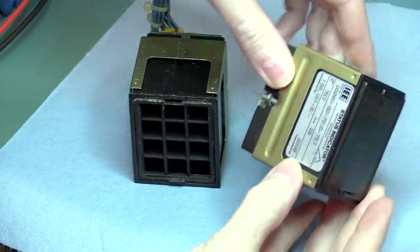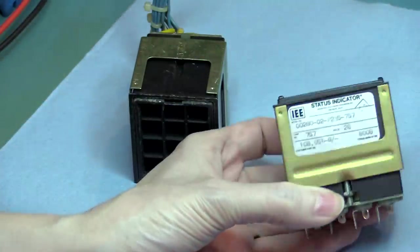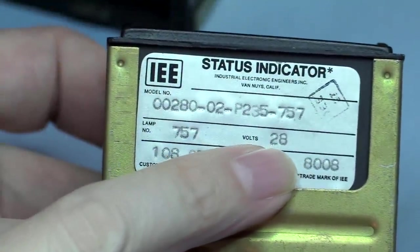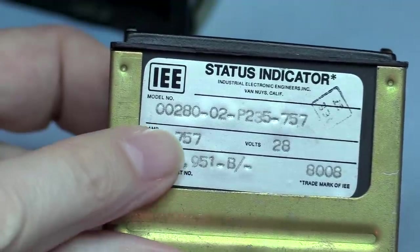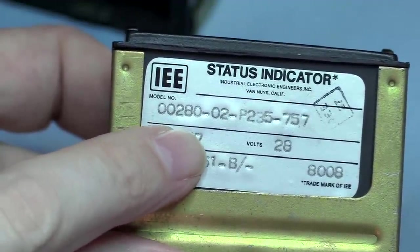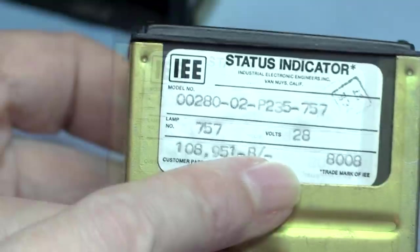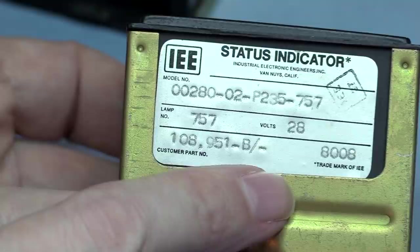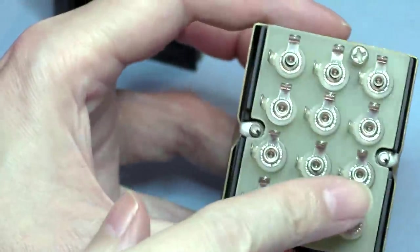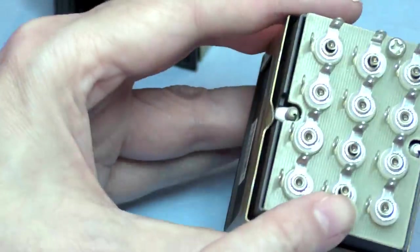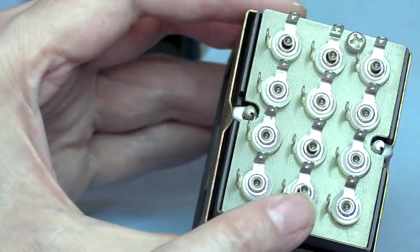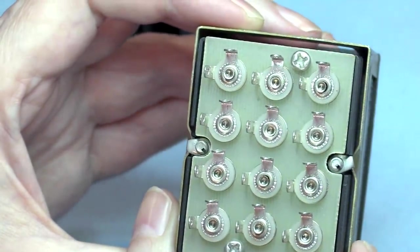Here we go. I got two of these IEE status indicators. This one is new, 28 volt lamps, lamp number 757. It's got its own model number, trademark of IEE. It's been inspected.